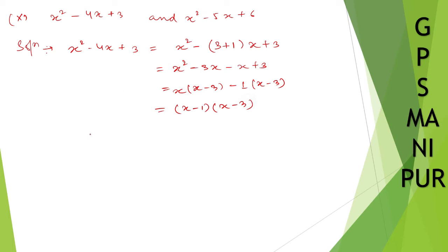Second one, you just write down x square minus 5x plus 6, which will be x square minus, so it will be 6, 6 on the 6, so 2 plus 3, 3 times 2 is 6, 3 plus 2. 3 plus 2 x plus 6, it's just splitting the middle term.